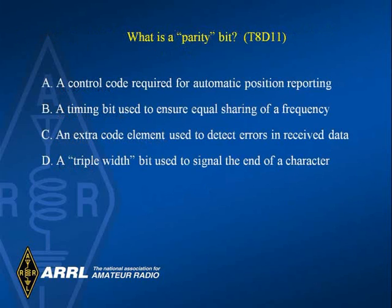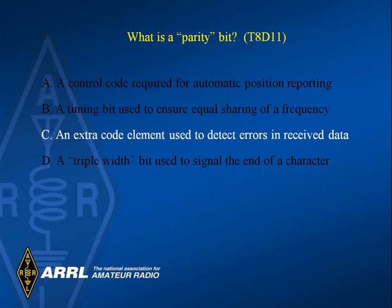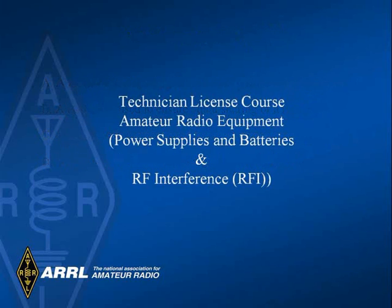What is a parity bit? Answer C: An extra code element used to detect errors in received data. We now deal with power supplies, batteries, and RF interference.